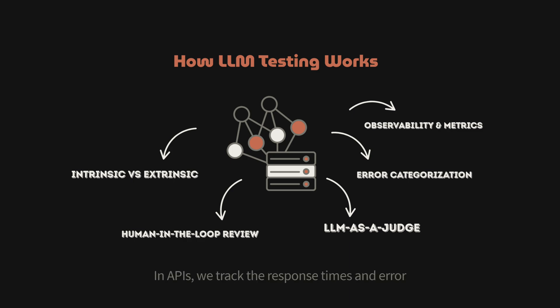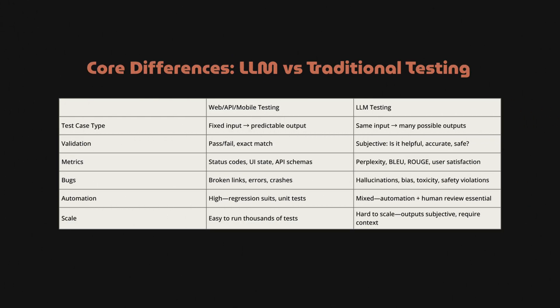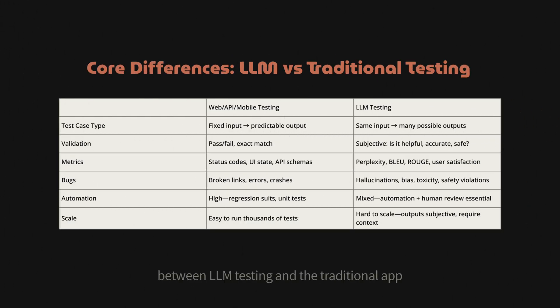The last technique is observability and metrics. In APIs we track response times and error rates. Similarly, in LLMs we add metrics like token usage, latency, user satisfaction, and failure categories. Now let's look at the core differences between LLM testing and traditional app testing.